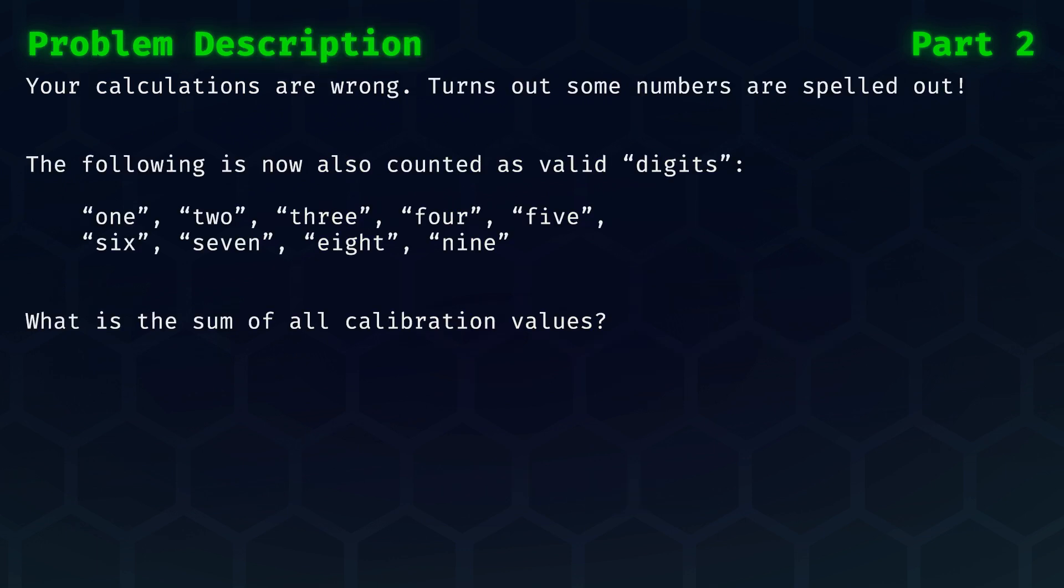In today's part two, we learn that our calculations are all wrong. It appears that some of the numbers are spelled out completely, giving us the following digits to also be counted as valid in their written-out form. If we take this into consideration, what is the sum of all the calibration values this time?